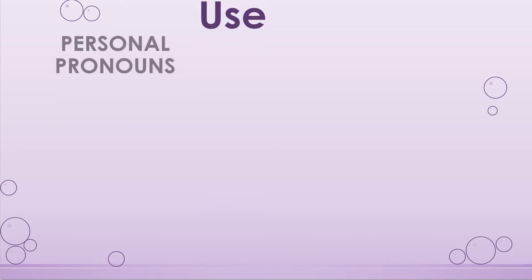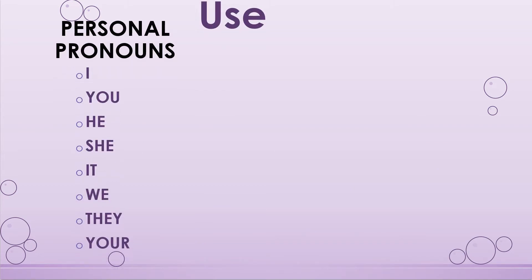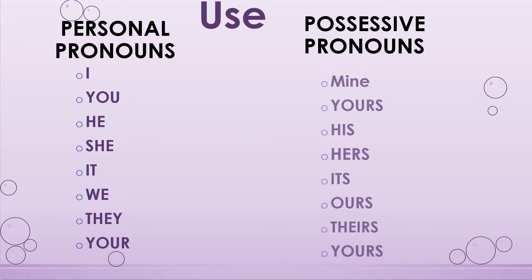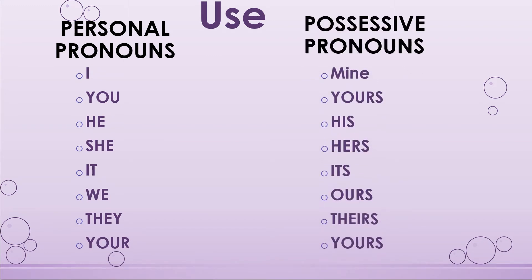For personal pronouns, the corresponding possessive pronouns are as follows: for 'I' it would be 'mine', for 'you' it would be 'yours', for 'he' it would be 'his', for 'she' it would be 'hers', for 'it' it would be 'its', for 'we' or 'they' it would be 'theirs', and for 'you' (plural) it would be 'yours'.